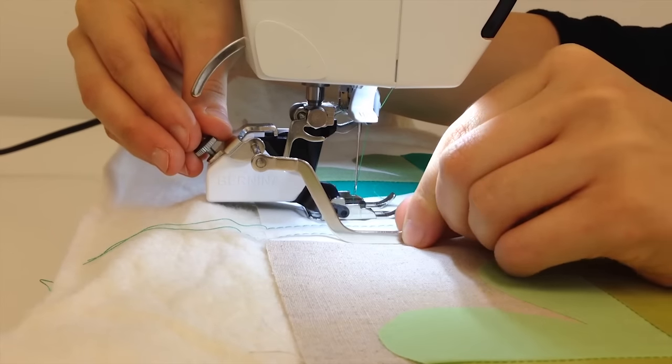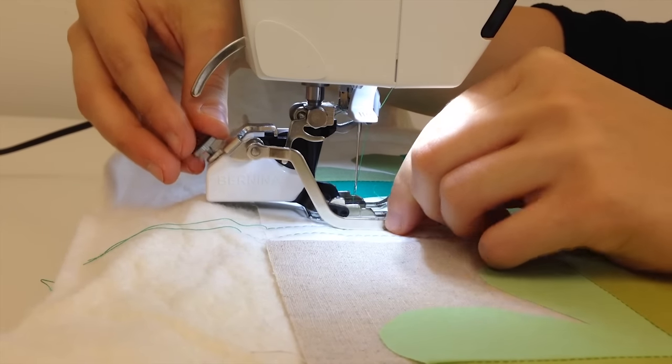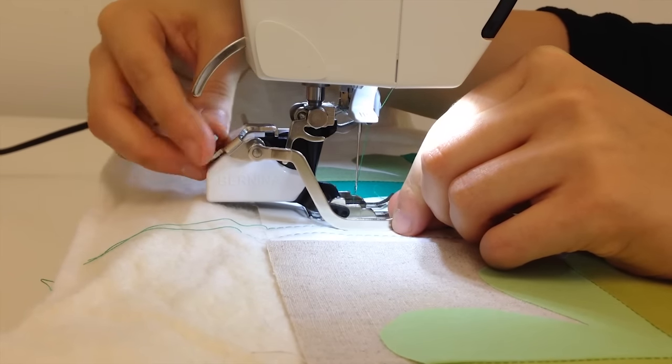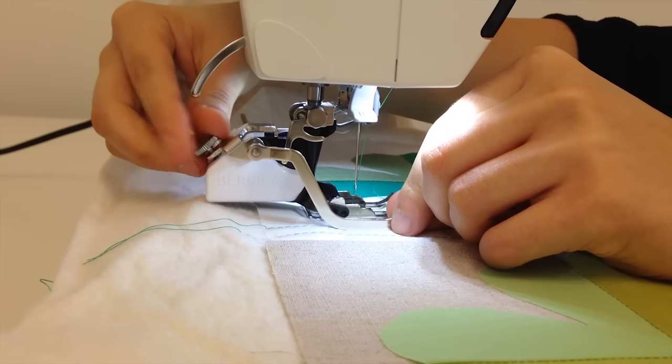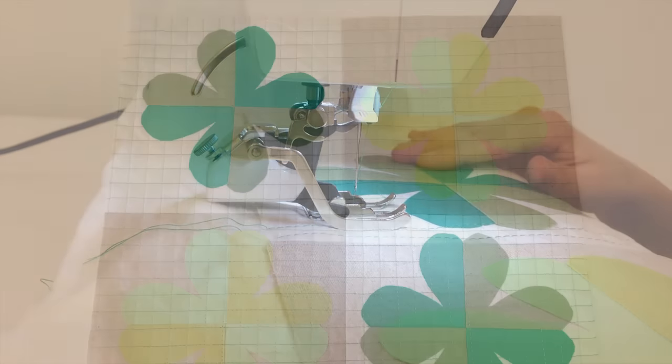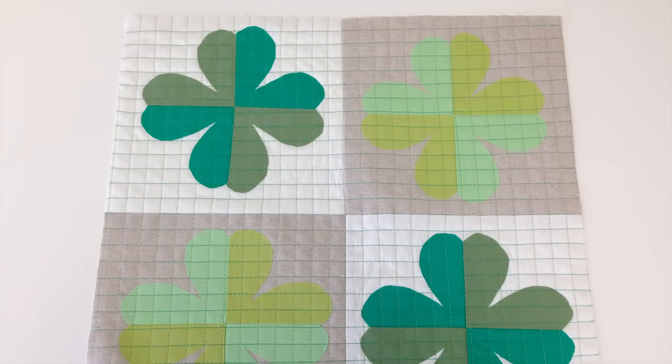If you want your stitch lines to be wider than your foot, the seam guide is a good tool to use. Unscrew the screw to loosen the seam guide and you are able to adjust the width. Square off your piece and you are ready to attach the backing.